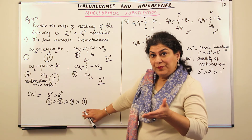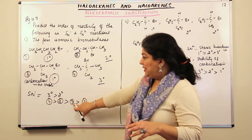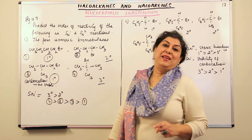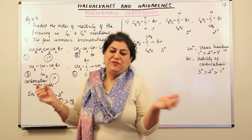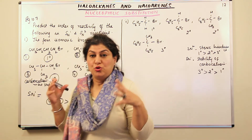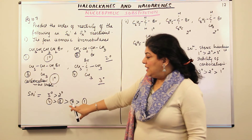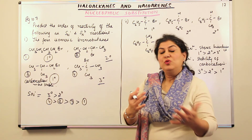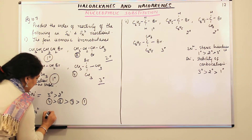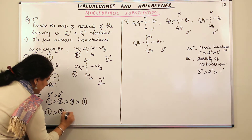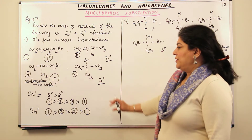Towards SN2, the steric hindrance of the tertiary would be the highest, then the secondary, and out of the two primaries, since compound 3 is branched it would have more steric hindrance. So for SN2, the sequence would be: compound 1 is the greatest, then 3, then 2, and the least reactive would be compound 4. So this was the first part of the question.